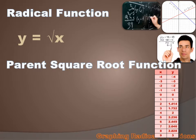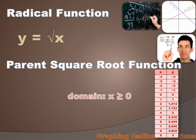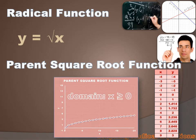I started by creating a table with x values from minus 4 to 9. When I calculated my square root of x, or my y value, the first four were square roots of negative numbers — imaginary numbers — and I can't graph those. So my domain starts with x equals 0; my domain is x is greater than or equal to 0. When I graph this, it looks like this. This is the graph of the parent function, and all the other radical graphs are variations of this graph.